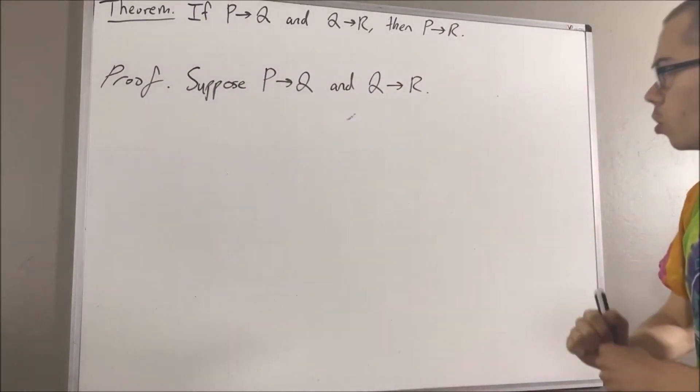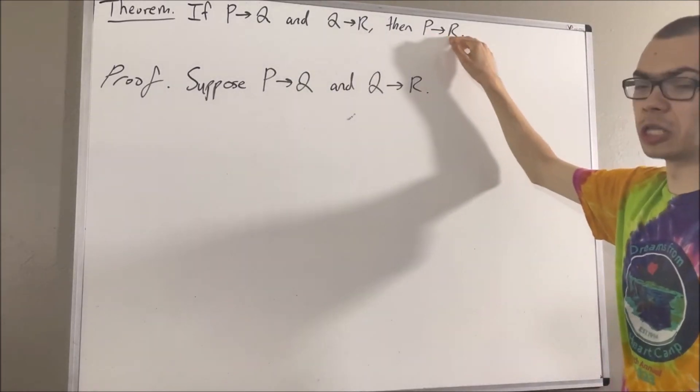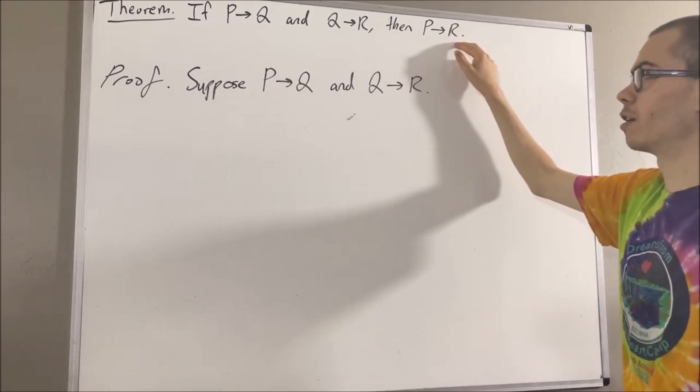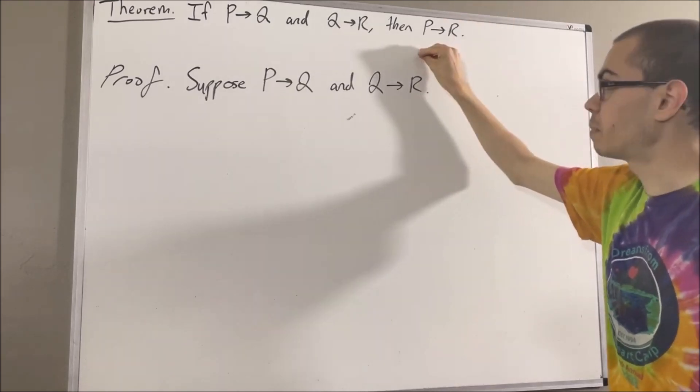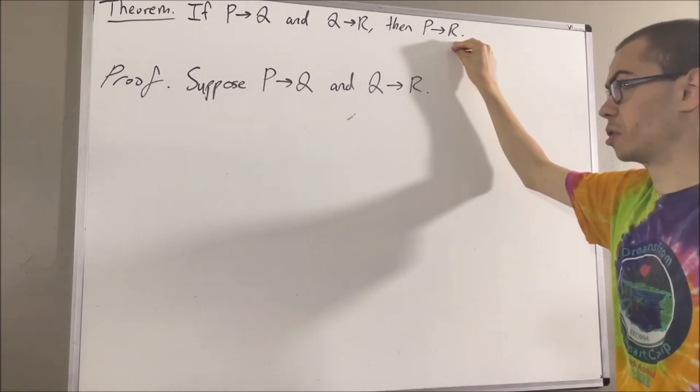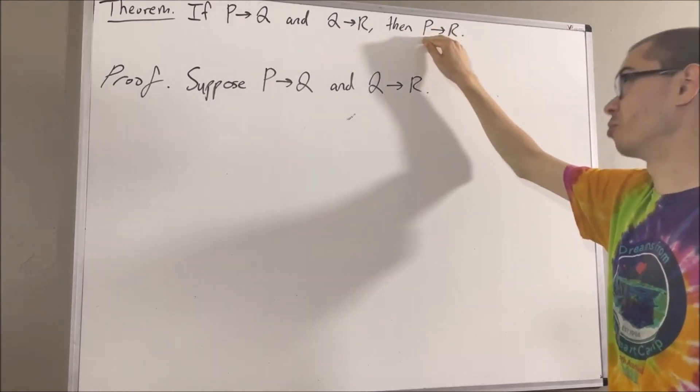And from here, our whole goal is to show that P implies R. Now, to show this, what we're really trying to show here is under the assumption that P is true, we have that R is also true. So really, we're trying to prove if P is true, then R is true.